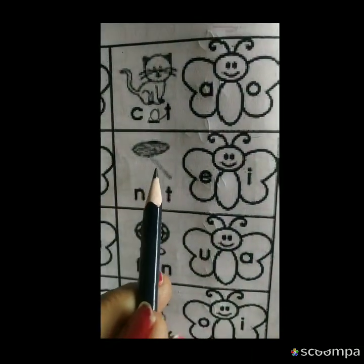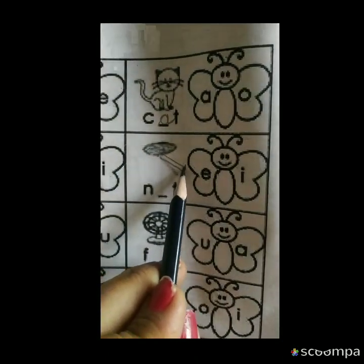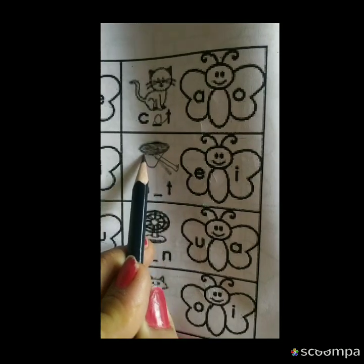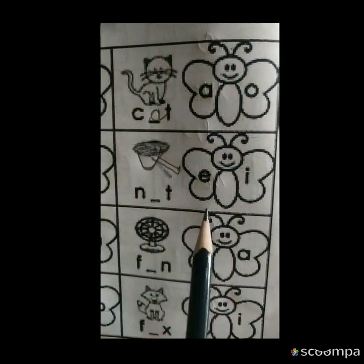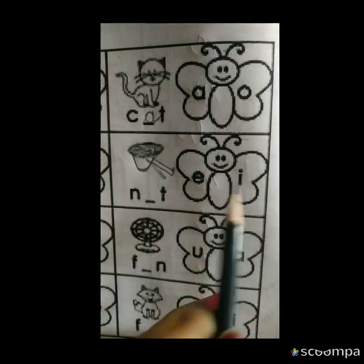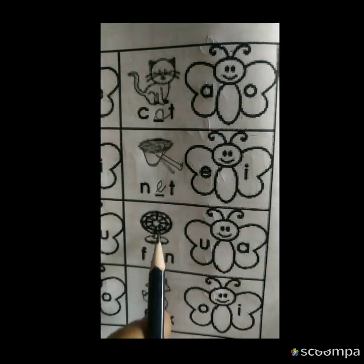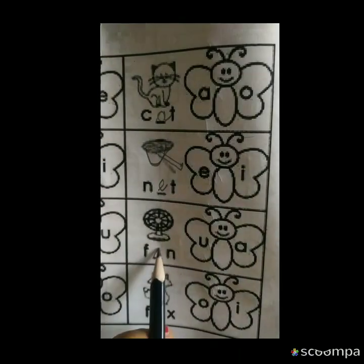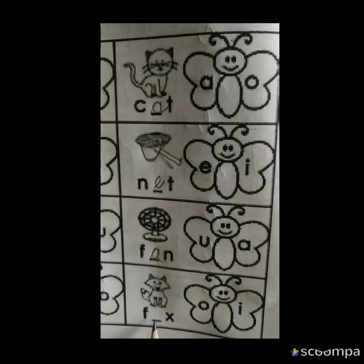This is net. I'm going to make the rod here like this. Net. This is fan. This is fox, it's a wild animal.